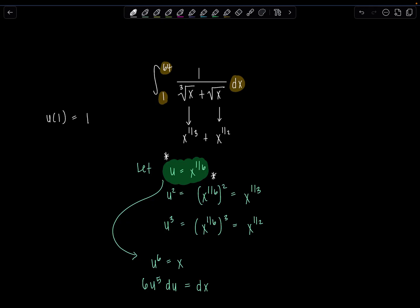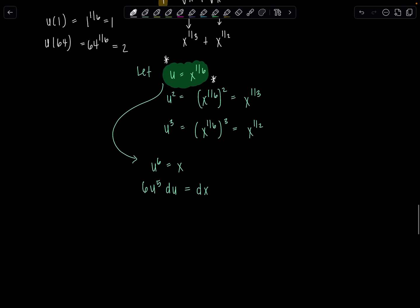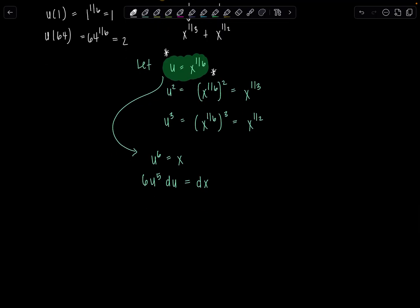So u of 1, 1 to the 1/6, that's still 1. And then u of 64, that's going to be 64 to the 1/6, the 6th root of 64 is 2. So whoever wrote this integral really loves us. They made such nice numbers. Okay, it was me. I love you all so much.